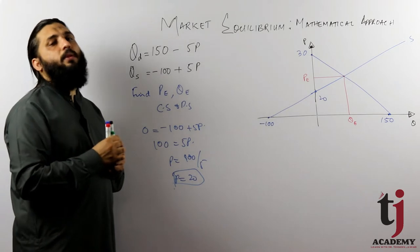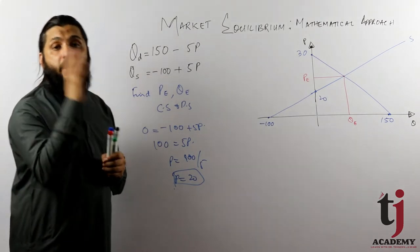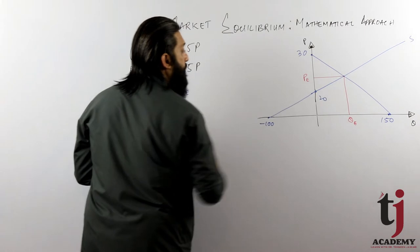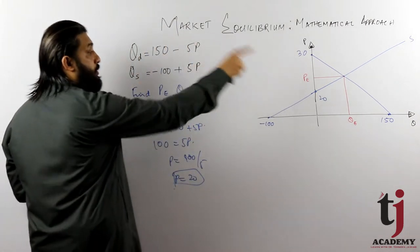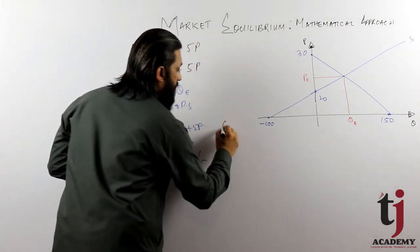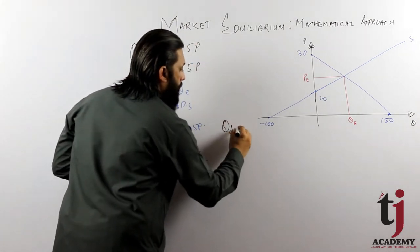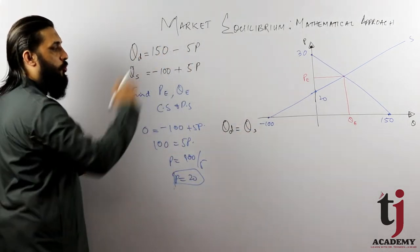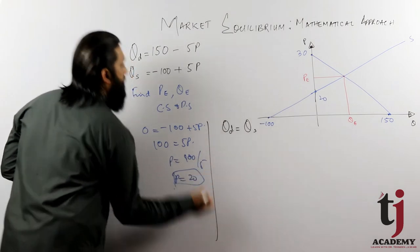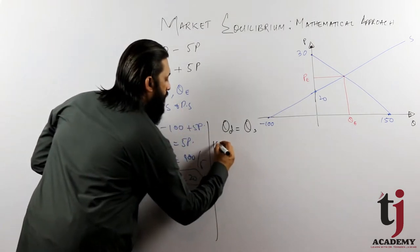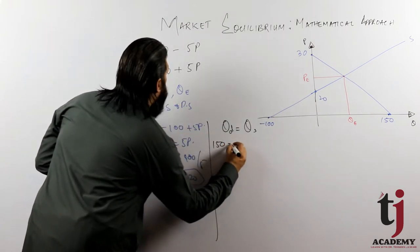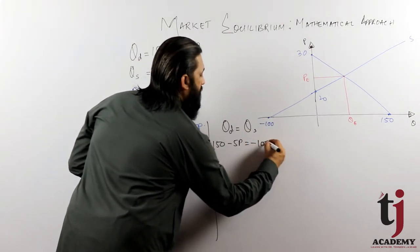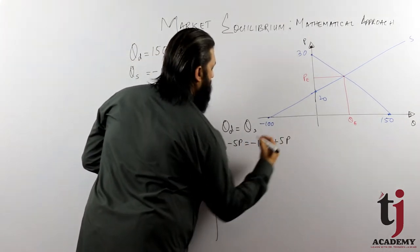At the point of intersection, the values of both curves are equal. At this point both values are equal, so we can say that at this point quantity demanded equals quantity supplied, because both are intersecting. So we equate them: 150 minus 5P is equal to minus 100 plus 5P.